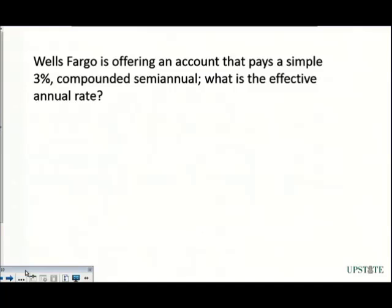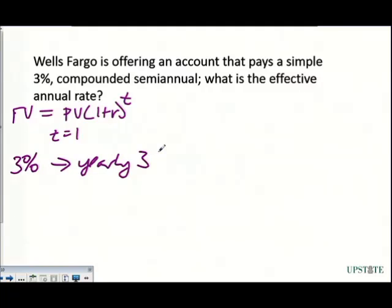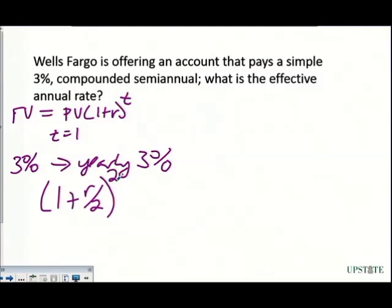A simple 3% compounded semi-annually — what is the effective rate? Our basic equation is that future value equals PV times (1 + r) raised to the t power. When doing a single time period, t equals 1, and we're figuring out the yearly rate. A 3% simple rate means our yearly rate is also 3%. Converting to semi-annual, we divide the interest rate by 2 and raise to the second power: (1 + 0.03/2)^2.